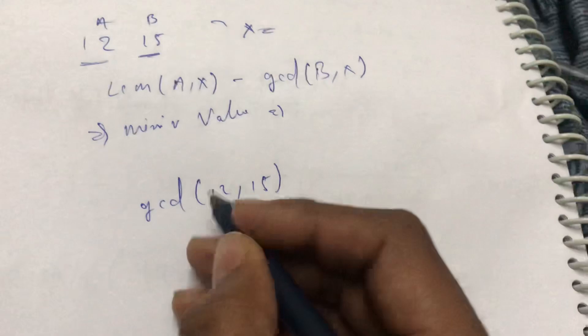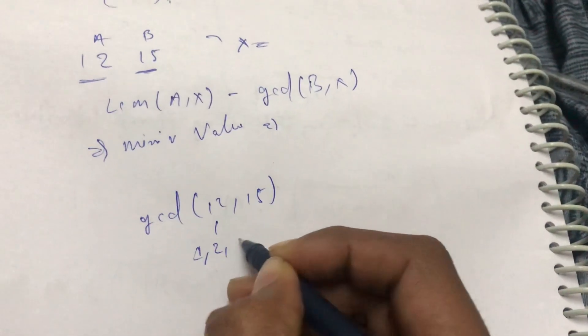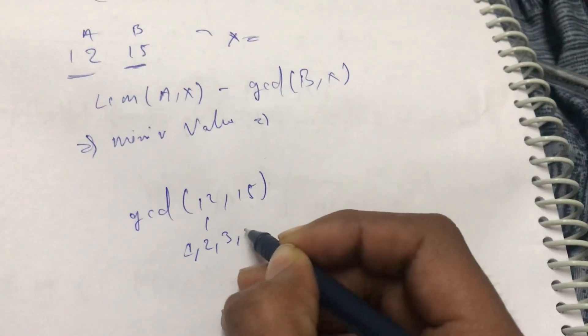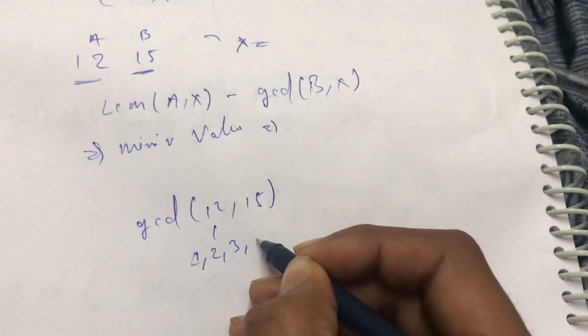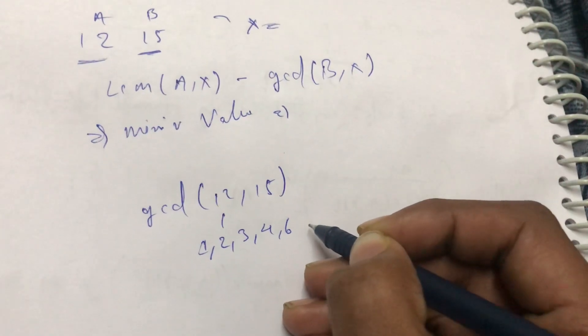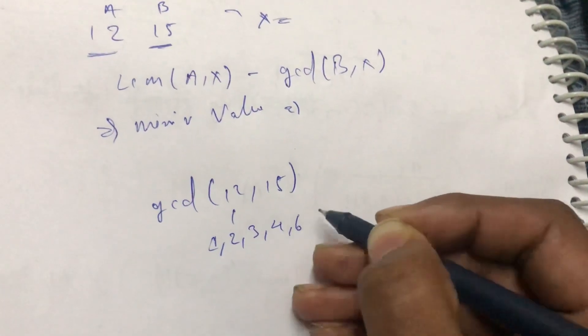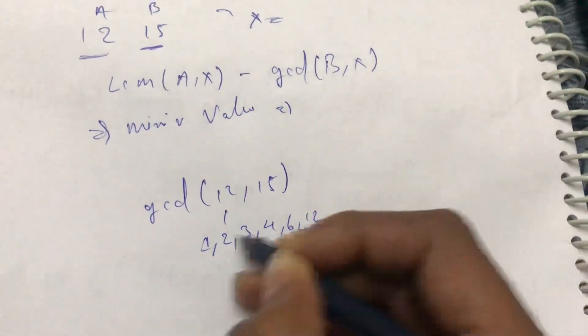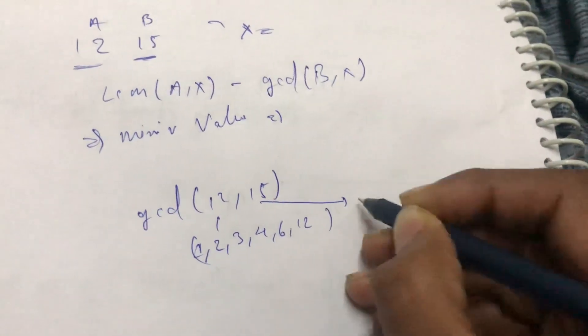So if I do the GCD of 12 and 15, what are the factors of 12? It is 1, 2, 3, 4, 6. Eight is not a divisor of 12, then we have 12.